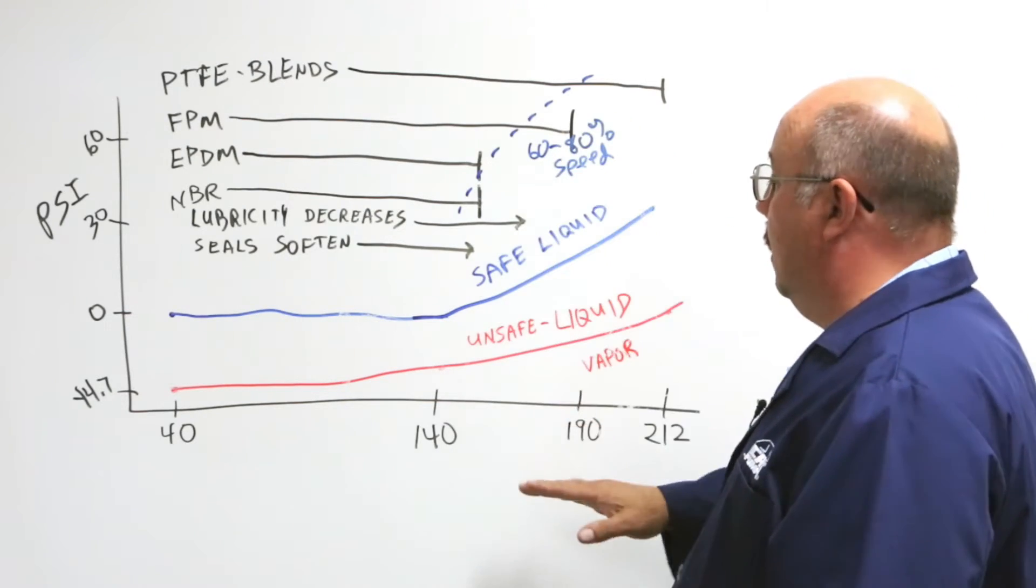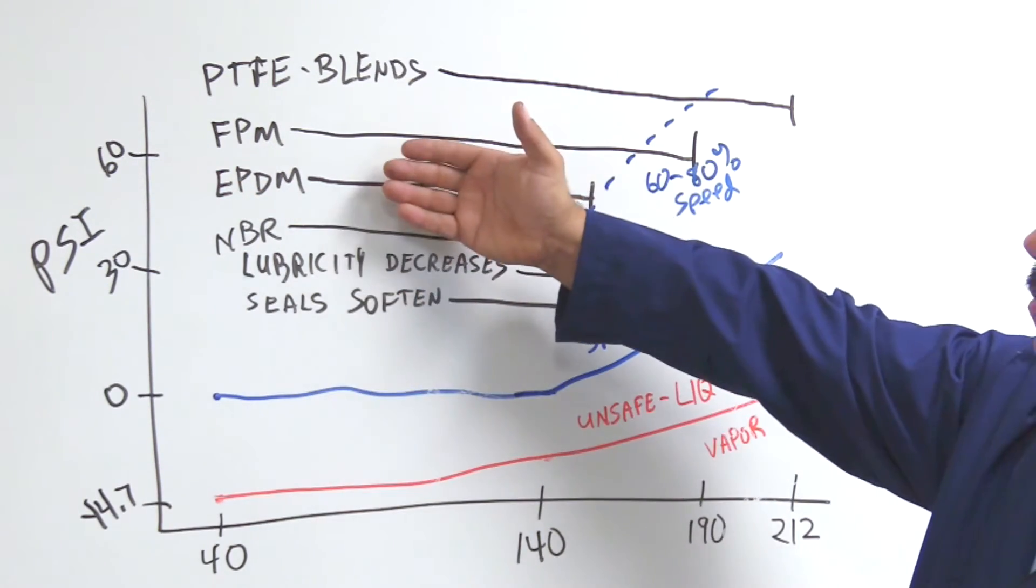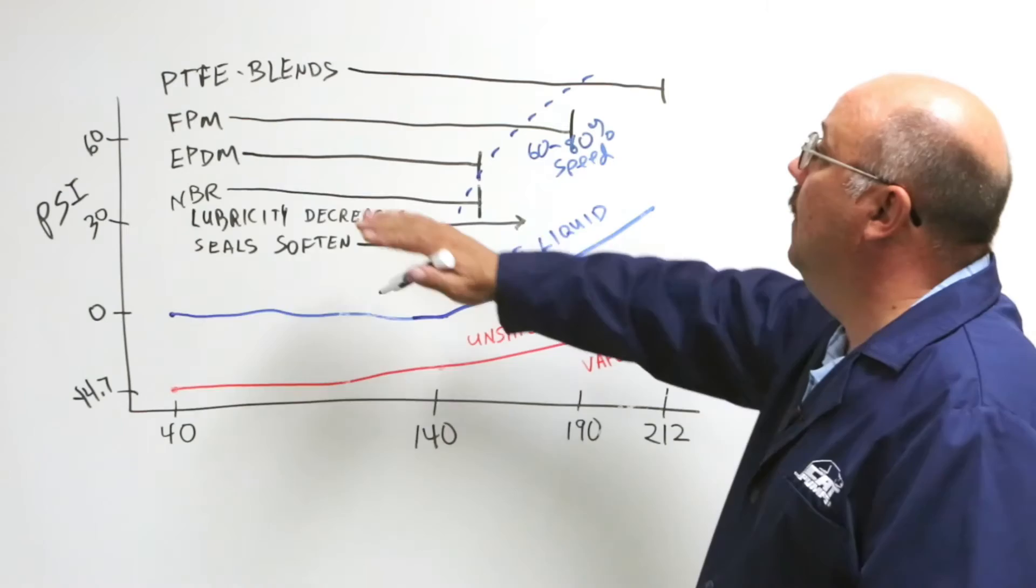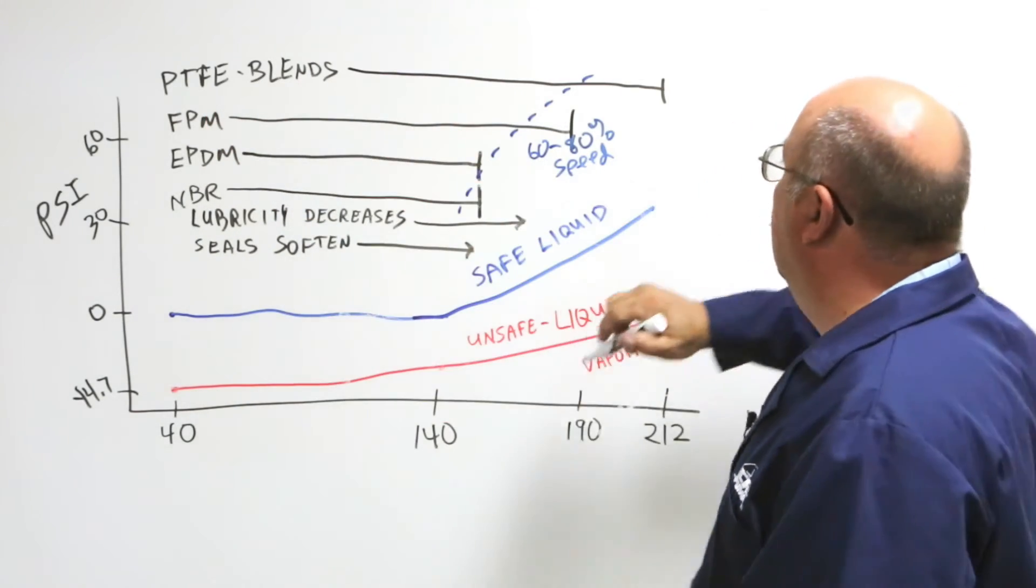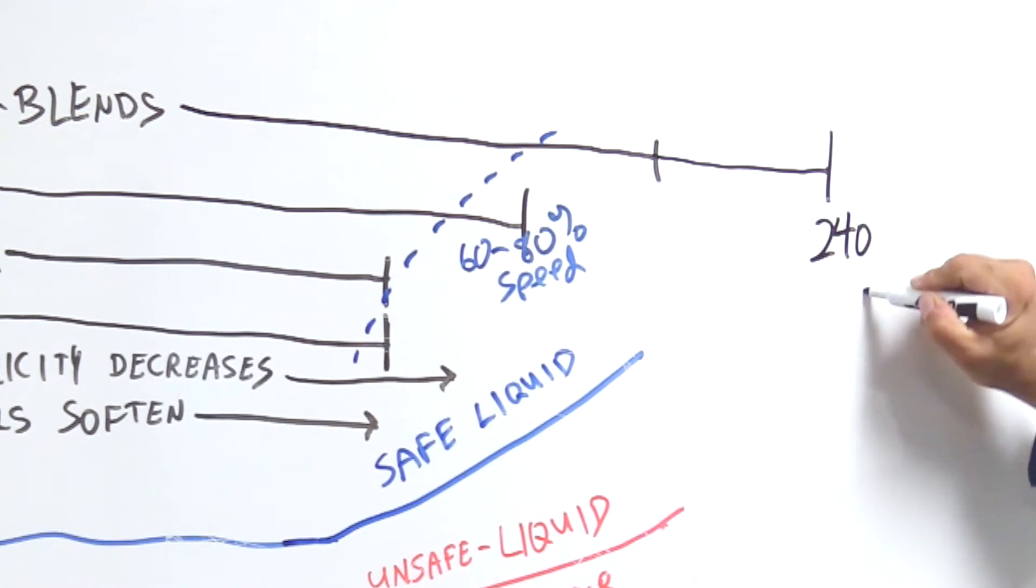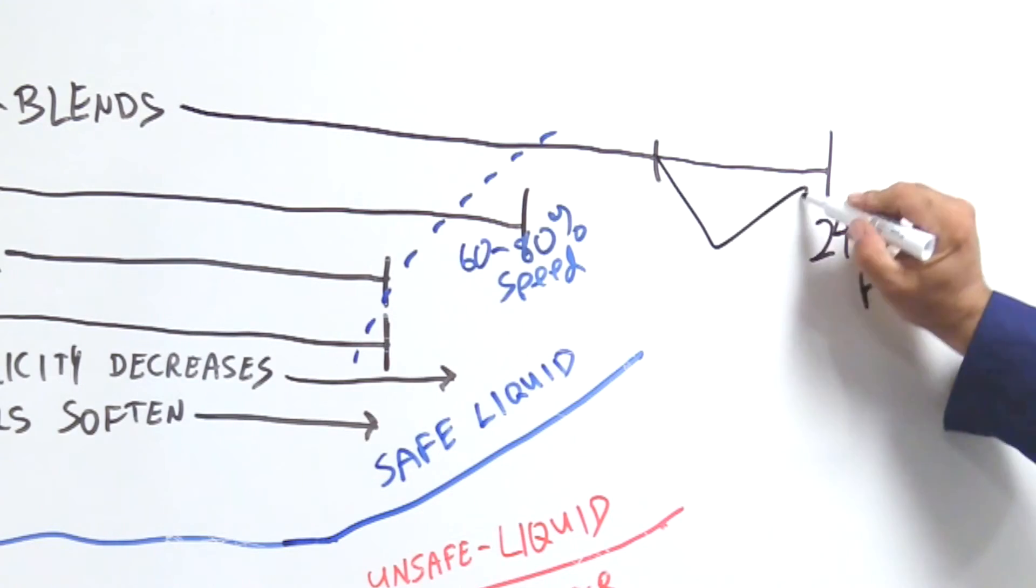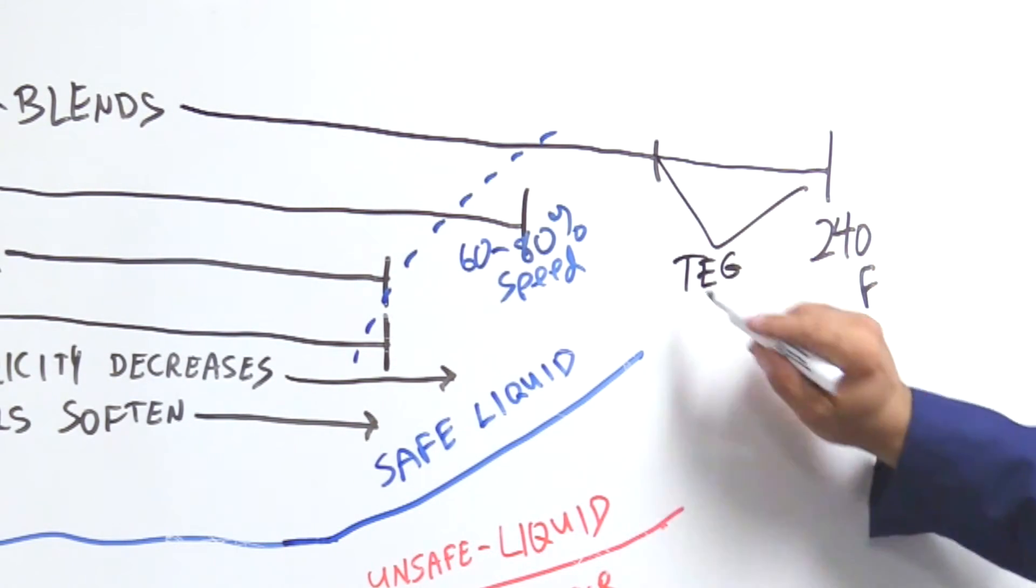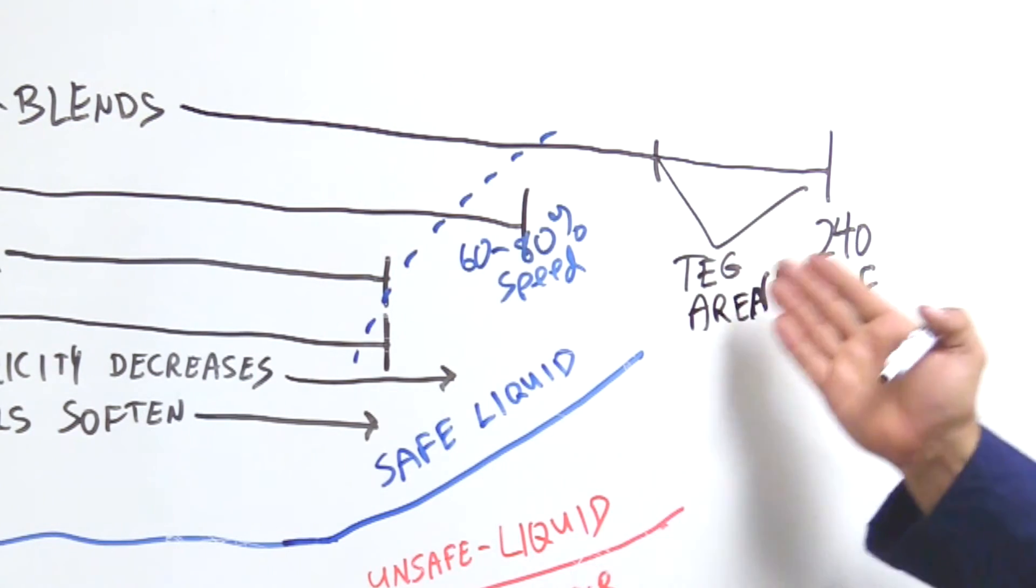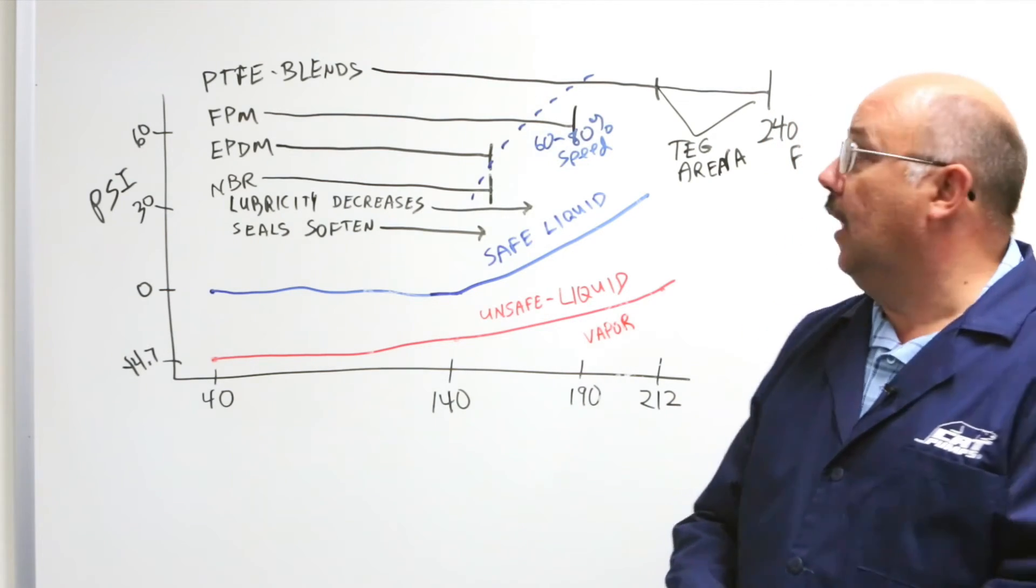So that's how we use temperature to dictate our inlet pressure and then these characteristics and the chemical compatibility to determine which seal materials we choose. Now the last thing I want to mention is the PTFE blends in specific. Remember I said they easily go to 212, well we can actually go up to 240 Fahrenheit if we are using a liquid that has really good lubrication properties such as TEG or triethylene glycol. In this arena of liquid we can pump that up to 240 because at these elevated temperatures it still has good lubricity properties to give us long seal life with the PTFE blends.